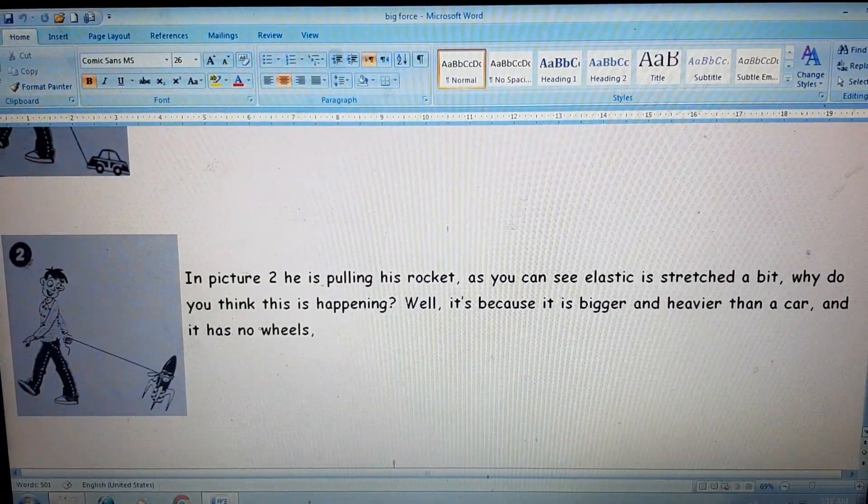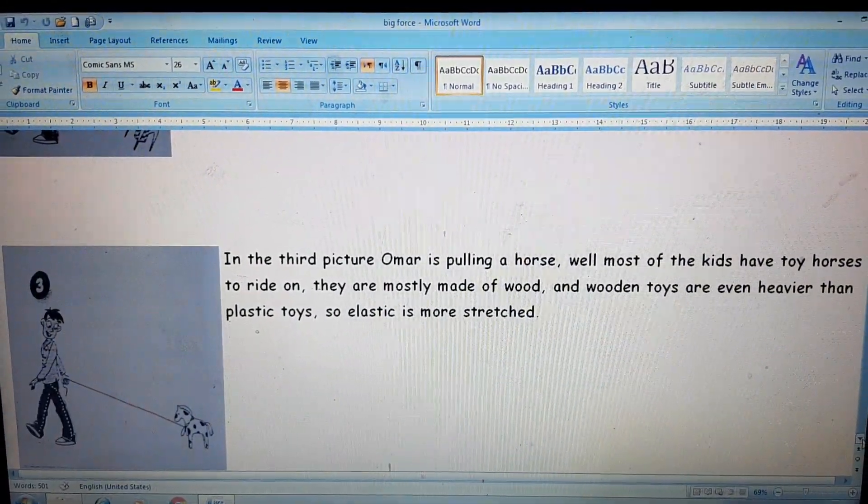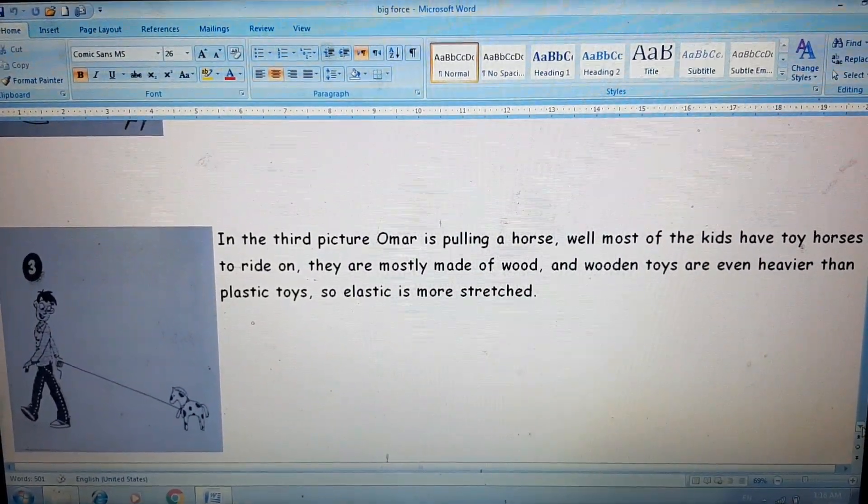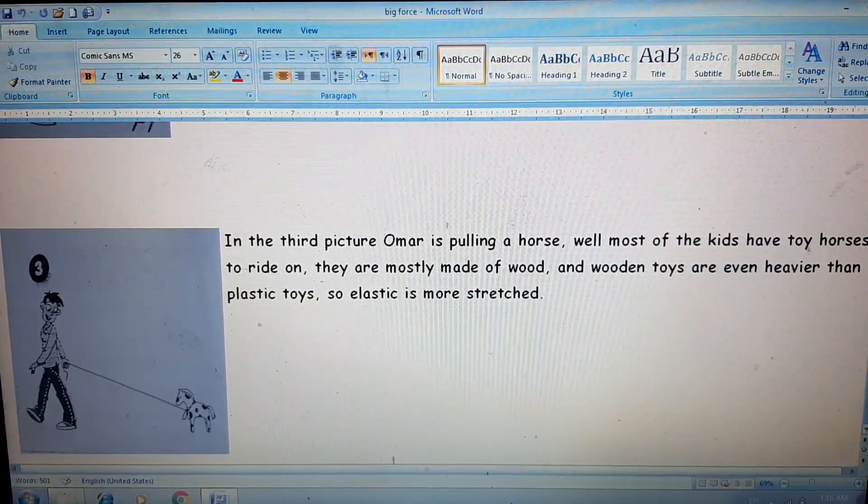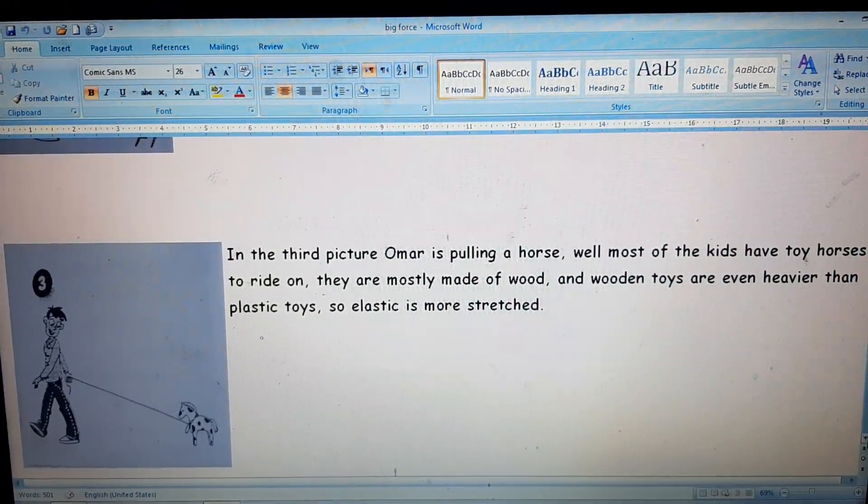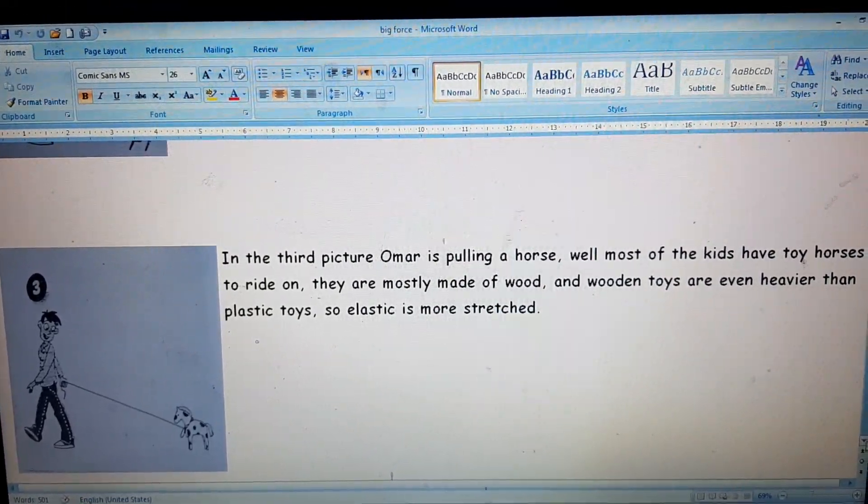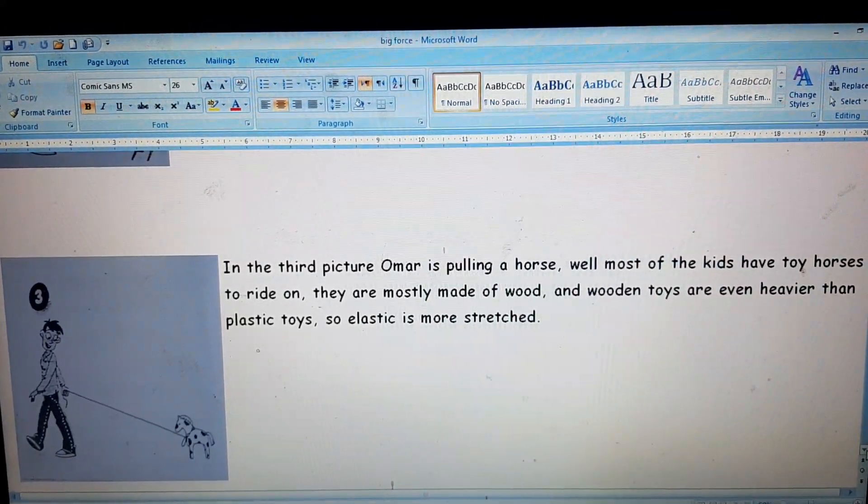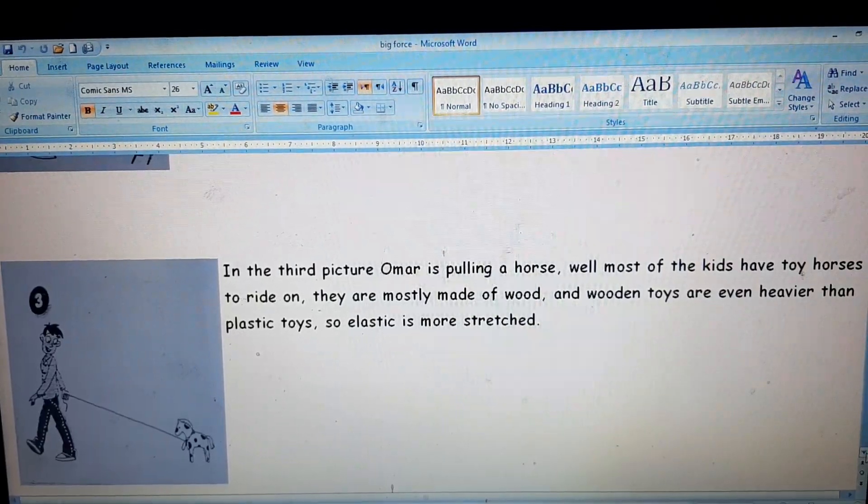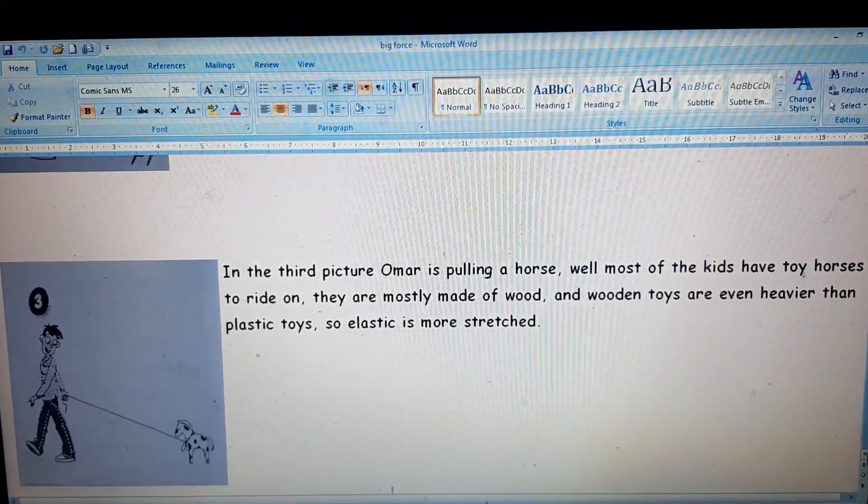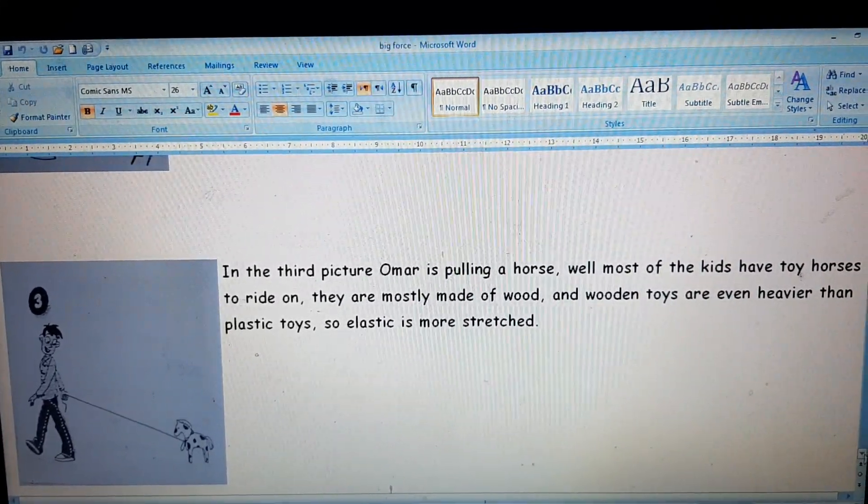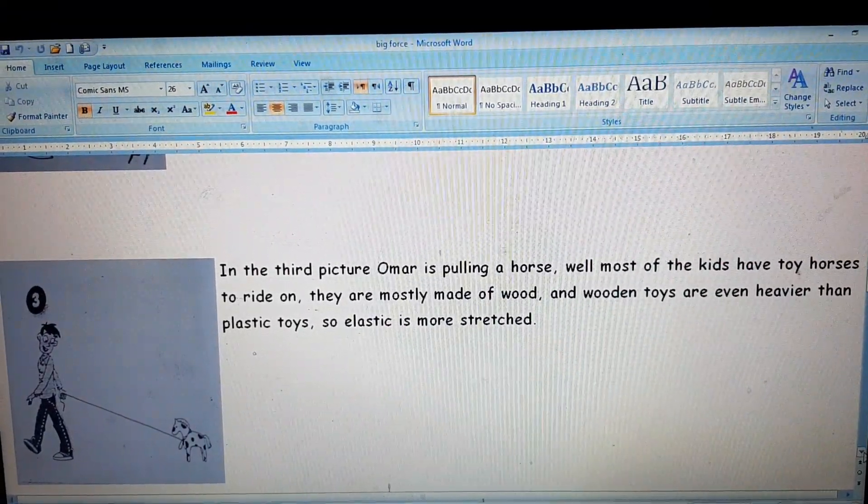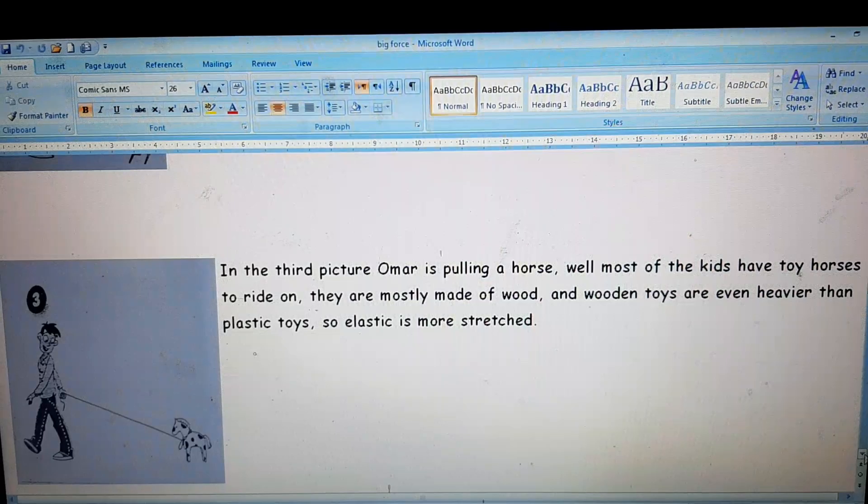In the third picture, you can see Omar is pulling a horse. Well, most of the kids may have this kind of horse to ride on, and those students might have known that it is made of wood and wooden toys are even heavier than plastic. So the elastic is more stretched, which means that it is using more force to move a wooden toy.